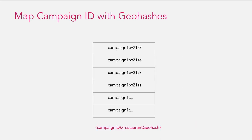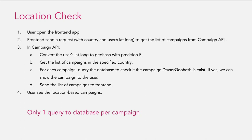The next step is to map the campaign ID with the restaurant Geohashes and store it in our database. You can store it as a key in Redis or anything, but in our case we store it in a similar format in DynamoDB. All of these previous steps are done when the marketing teams create the campaigns.